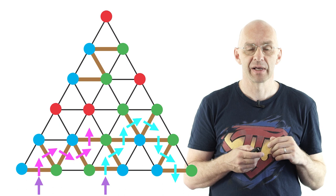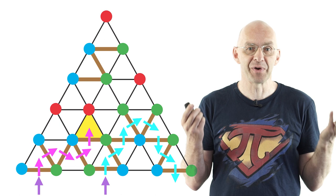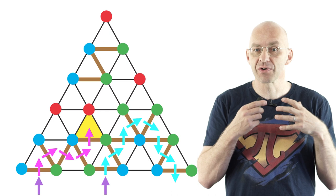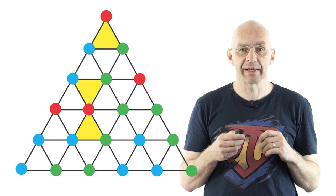Now obviously this cannot go on forever and therefore we eventually must end up in one of those special three colored rooms. No matter how hard we try to avoid this. Isn't this a wonderful proof? Now there's a bit more. You can actually show that there's not only just one special room but an odd number of them. So for example in this case we've got three. So maybe also see whether you can extend our proof in the comments to show this.